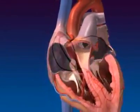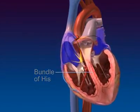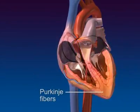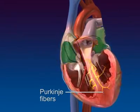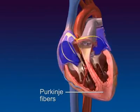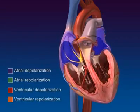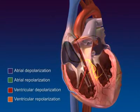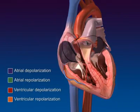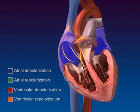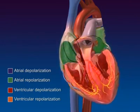The impulse travels quickly through the bundle of His within the interventricular septum. The bundle branches into smaller Purkinje fibers that radiate throughout the ventricular myocardium. Action potentials travel quickly through the Purkinje fibers, then spread to the surrounding ventricular myocytes via gap junctions. Depolarization triggers contraction. Repolarization triggers relaxation. The swift spread of the impulse through the specialized conduction system ensures that the ventricles become excited and contract as a unit.